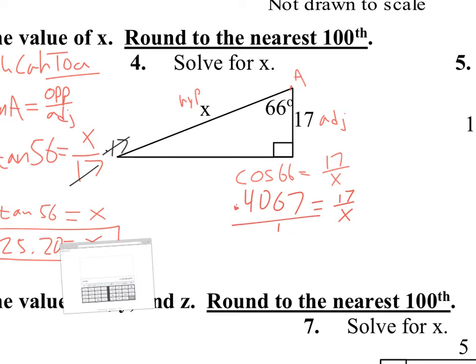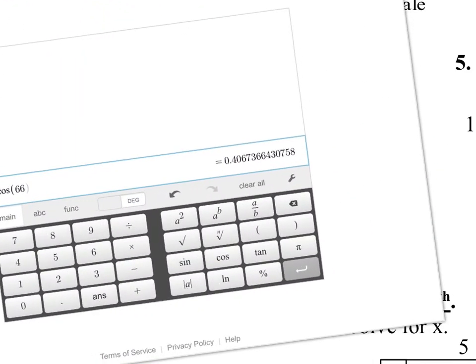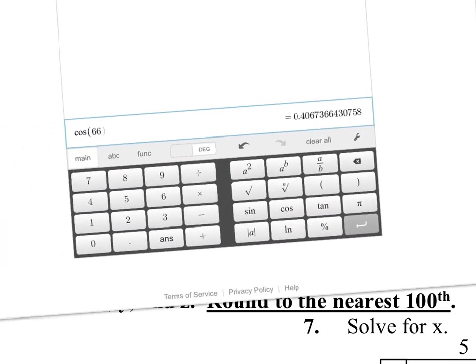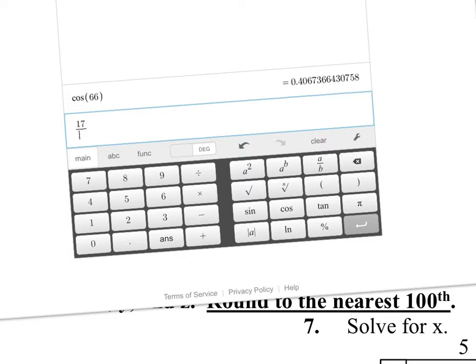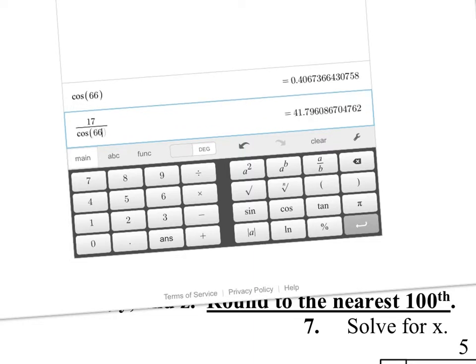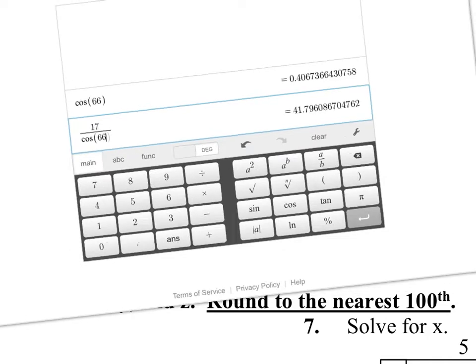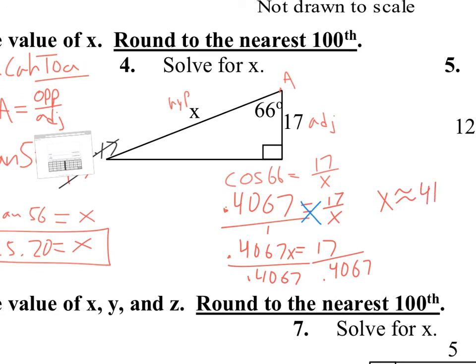We set up 0.4067 equals 17 over X, then cross multiply to get 0.4067 X equals 17. Dividing both sides by 0.4067 — really, dividing by cosine of 66 — gives us X equals 17 divided by cosine of 66, which is approximately 41.79. So X is 41.79.